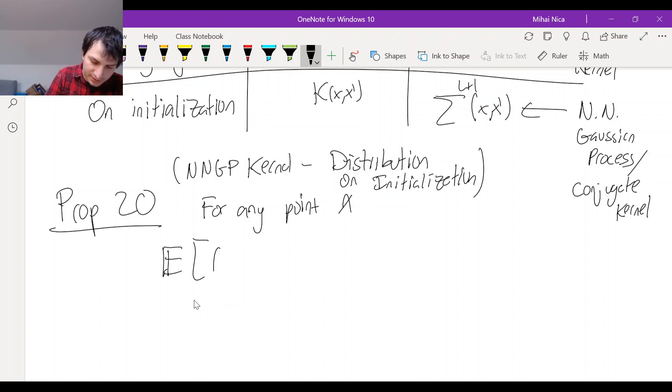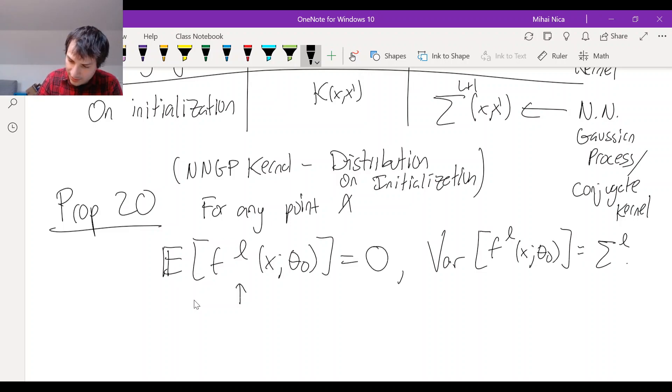The expected value of FL(X, theta 0). So this is 0. So this is the output of the Lth layer of the network at initialization. So it's mean 0. Its variance is this, sigma L of XX. Where sigma L is going to be the NNGP kernel for the Lth layer. And FL is going to be Gaussian. FL of X theta 0 is Gaussian.